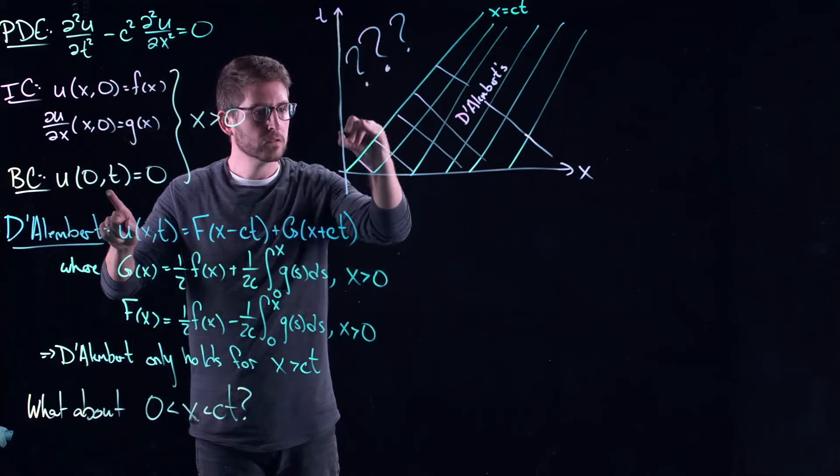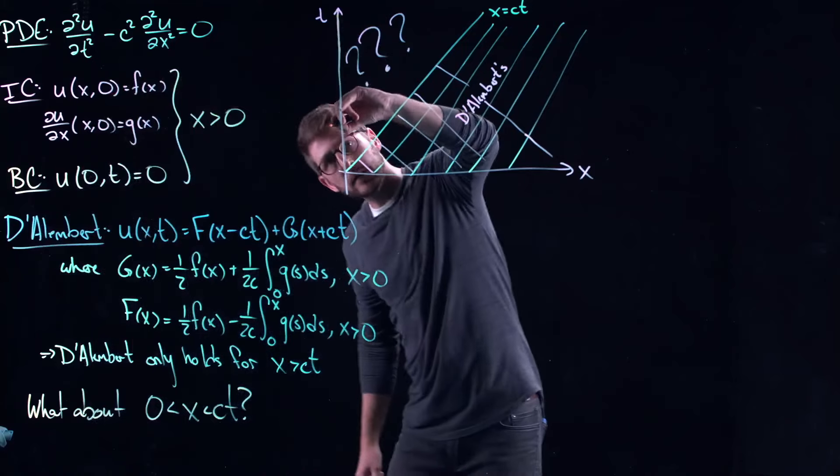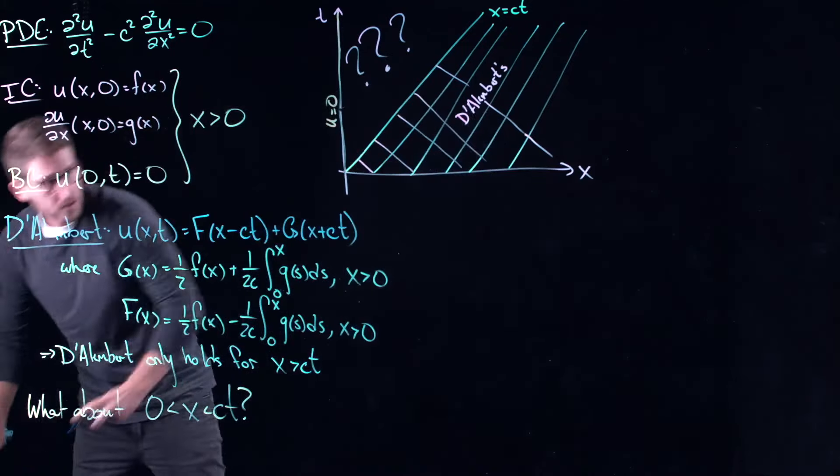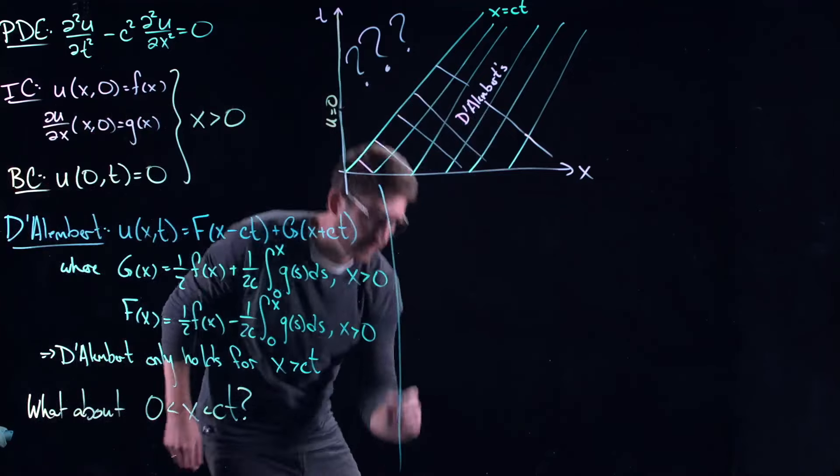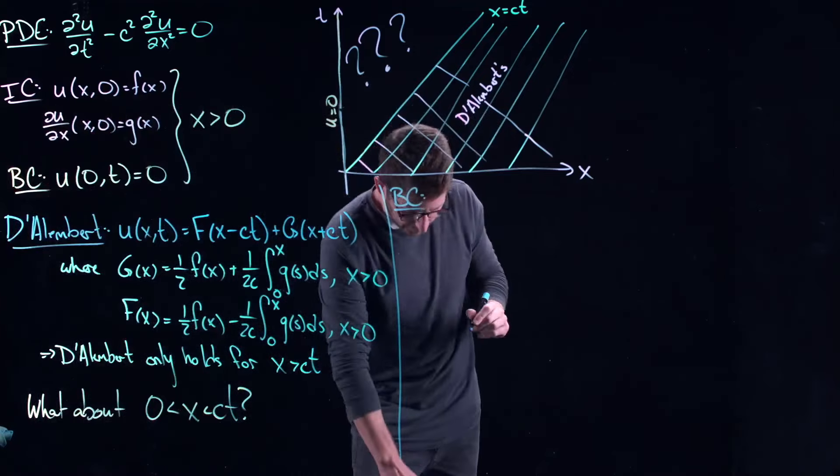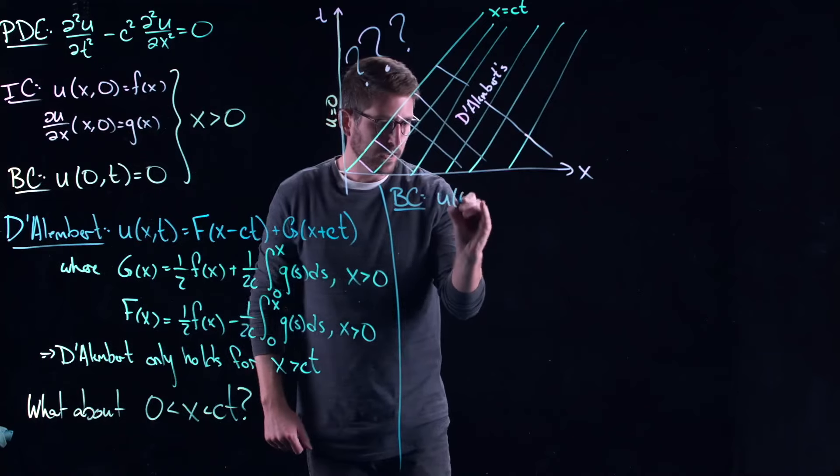which sits along this line, right? So this is u equal to 0 on this line. So let's use that boundary condition here. Our boundary condition tells us that we have this.